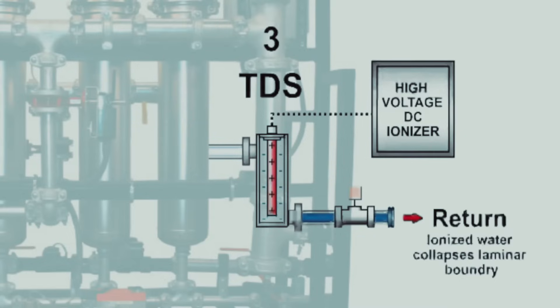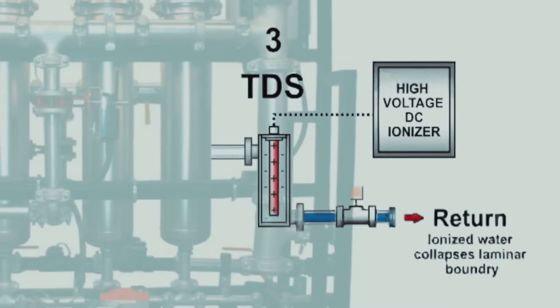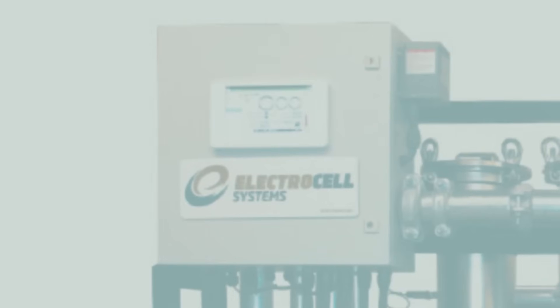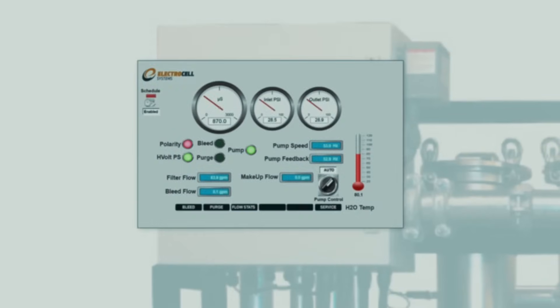The ElectroCell system's touchscreen monitor is user-friendly and fully automated. It includes alarms, trending graphics, controls, and flow totalizing, which can be integrated into your BACnet, LAN, or Modbus network.